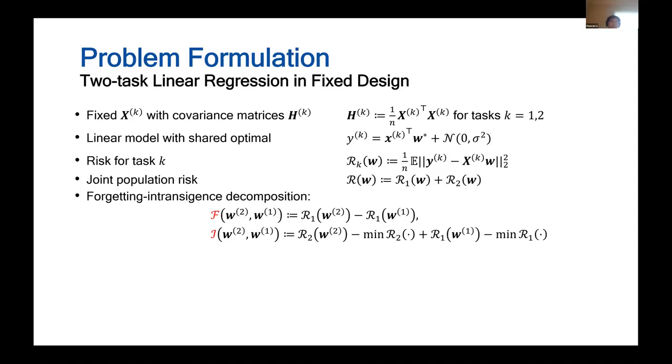To further analyze the forgetting and intransience, we define forgetting as the difference of the risks on the first task before and after learning the second task. In this way, joint population risk can be directly decomposed into the forgetting and intransience. So that's what we are studying.